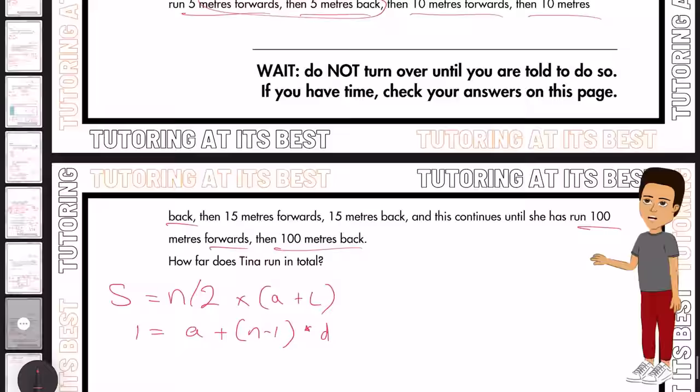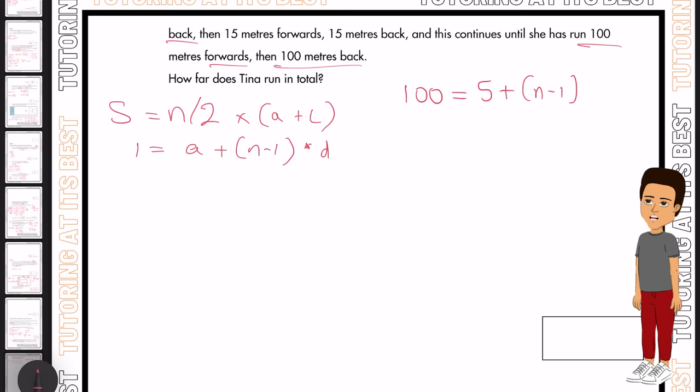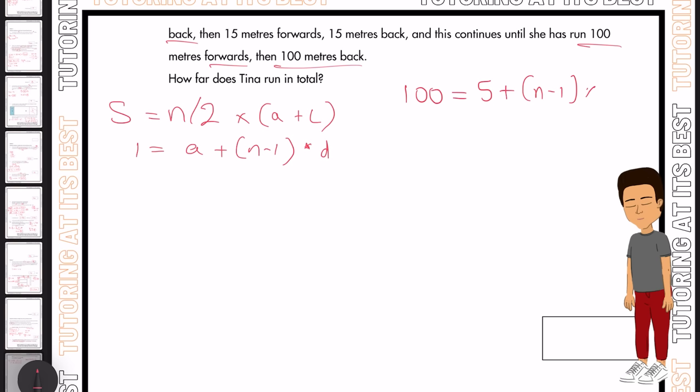So all we need to do here is solve for N. So let's do that. We're going to finish off with 100, and we know that's 5 plus N minus 1. And our difference is D, which in this case was actually 5, wasn't it? So we can say times by 5. So if we take that 5 over, we're left with 95, which equals N minus 1 times by 5. But then if we take the 5 over, that becomes divided by 5. So we have 19 equals N minus 1, and N equals 20. So now we know that the number of terms was 20.